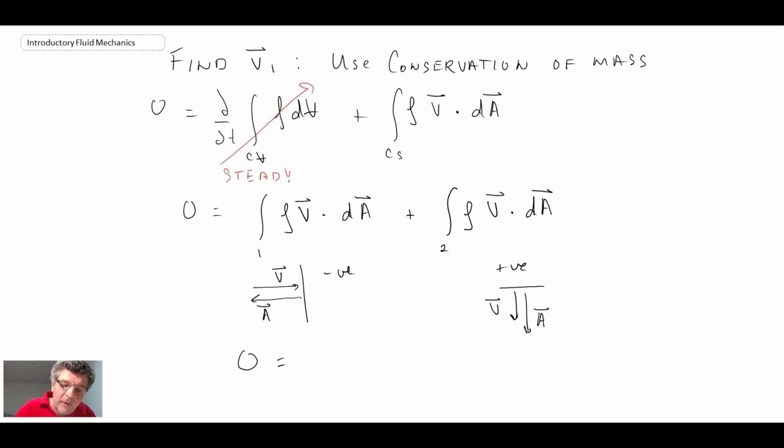So what we can do is rewrite the conservation of mass equation in the following way. The first term is going to be negative. And I could cancel out the density at this point, but I haven't done that yet. Okay, so we get that.